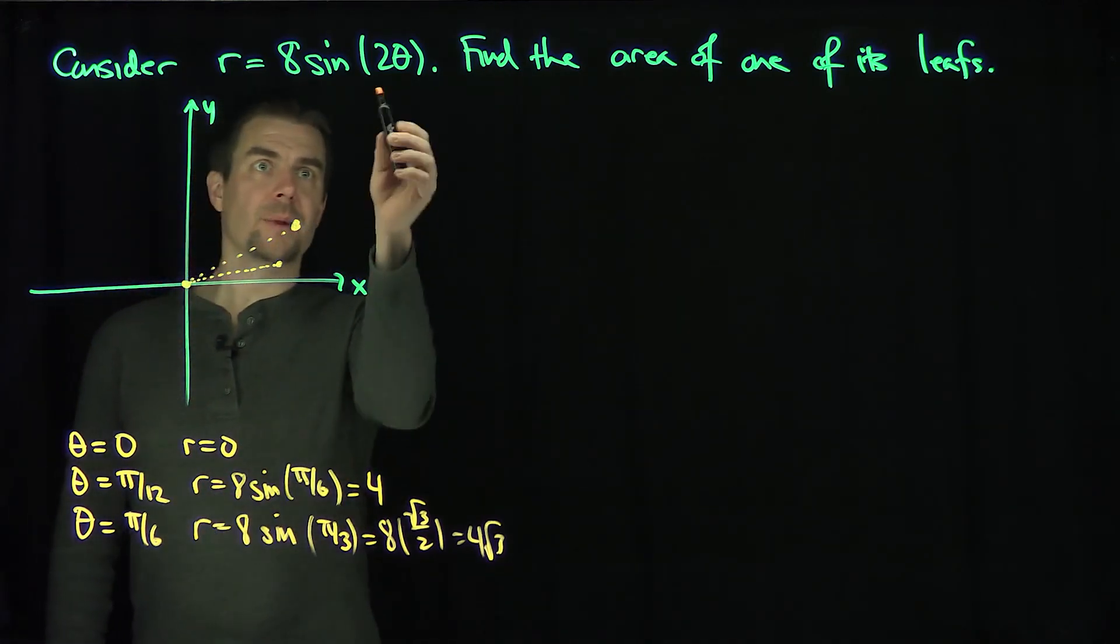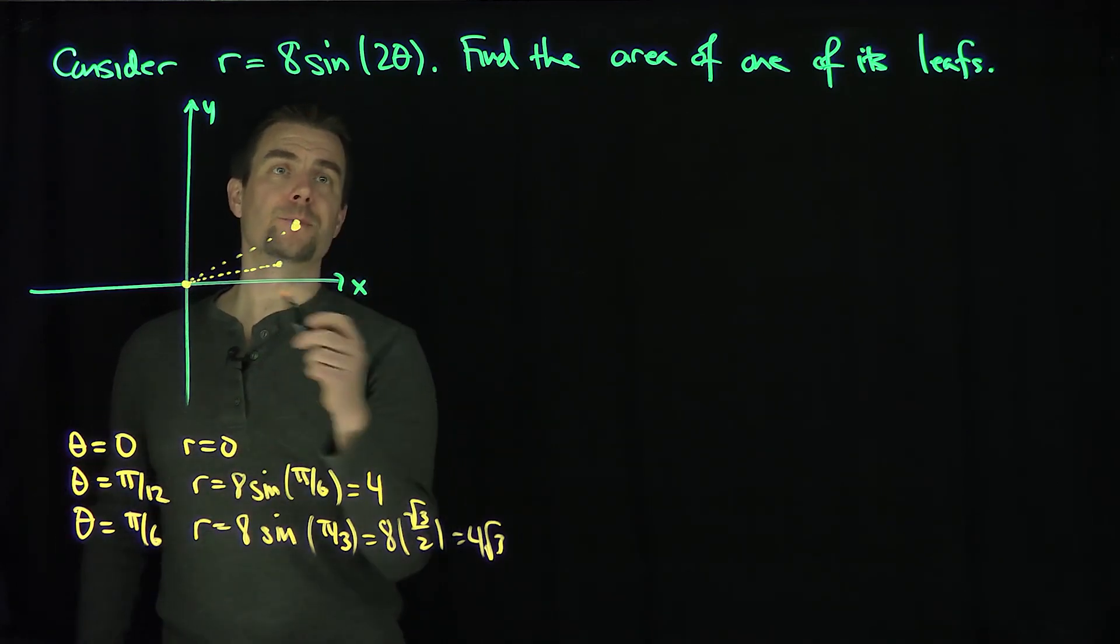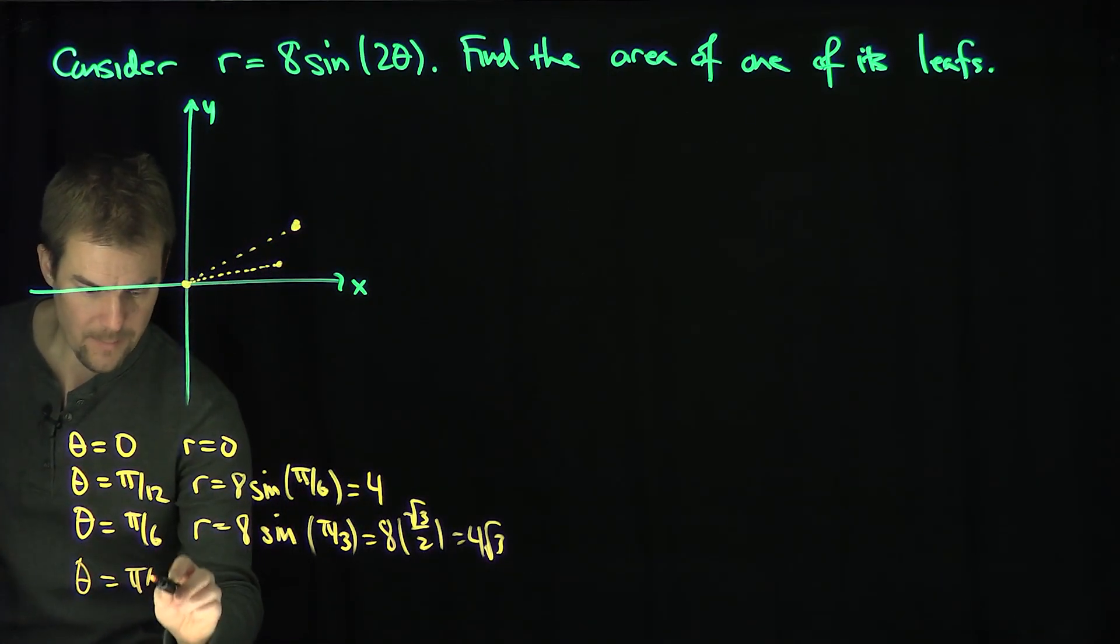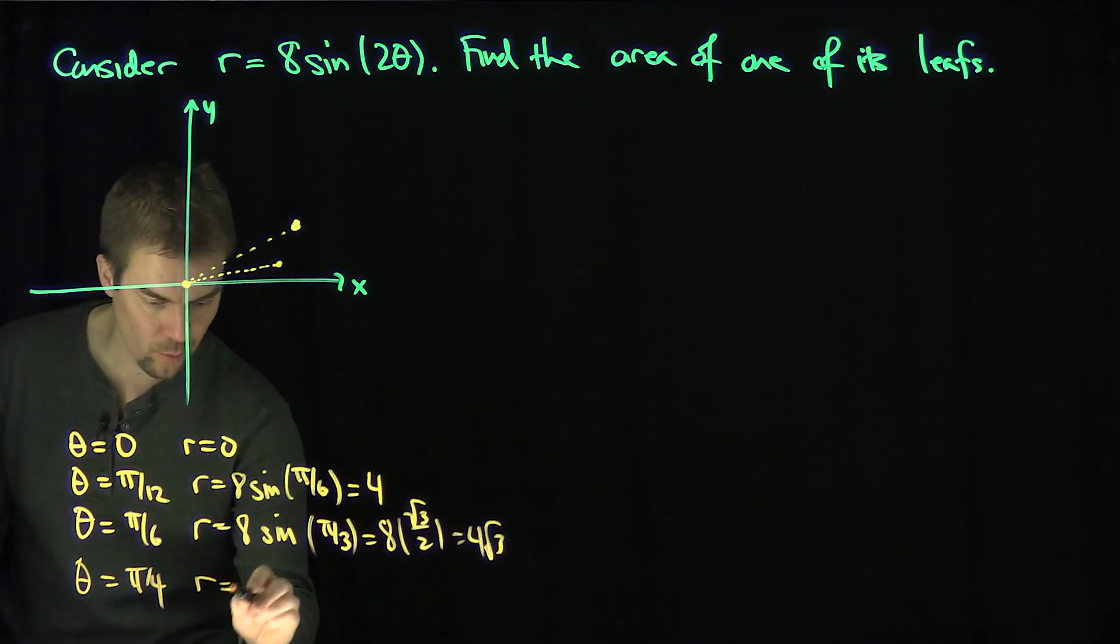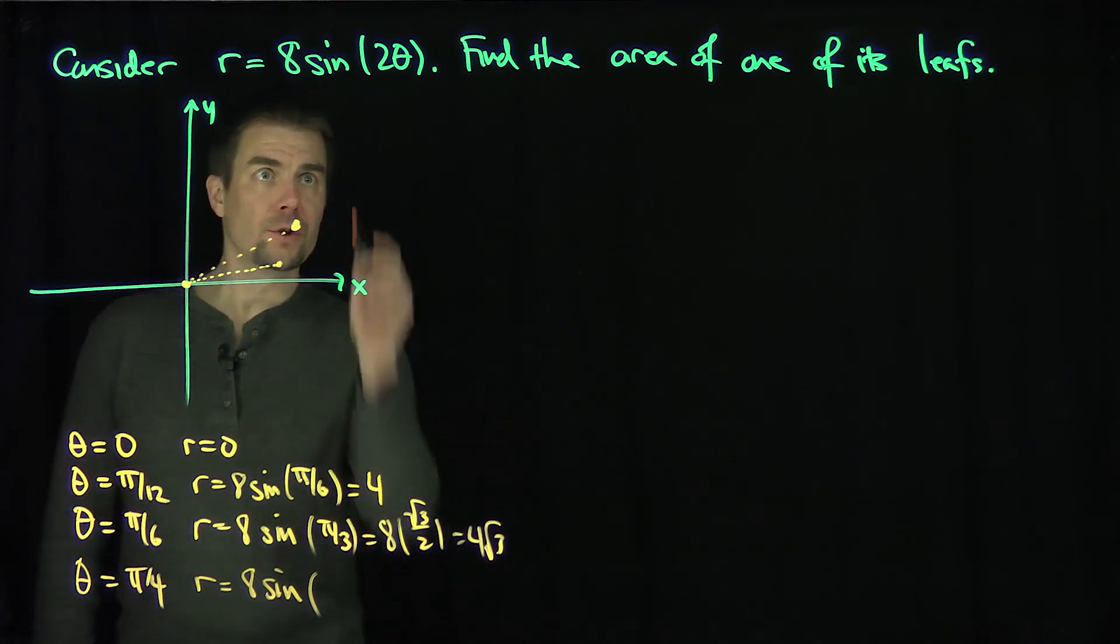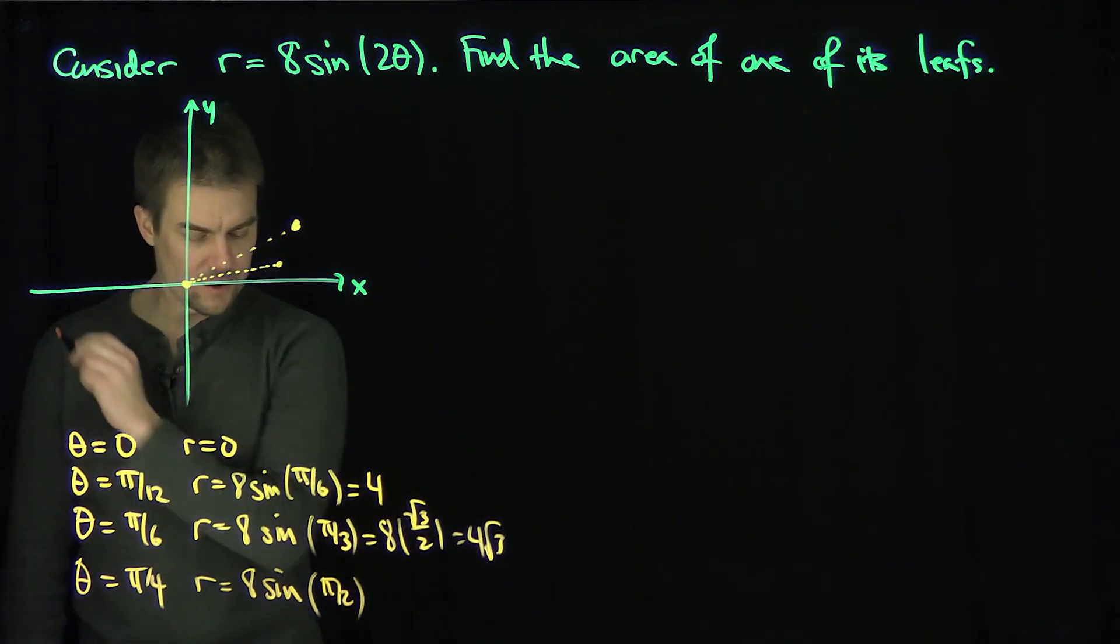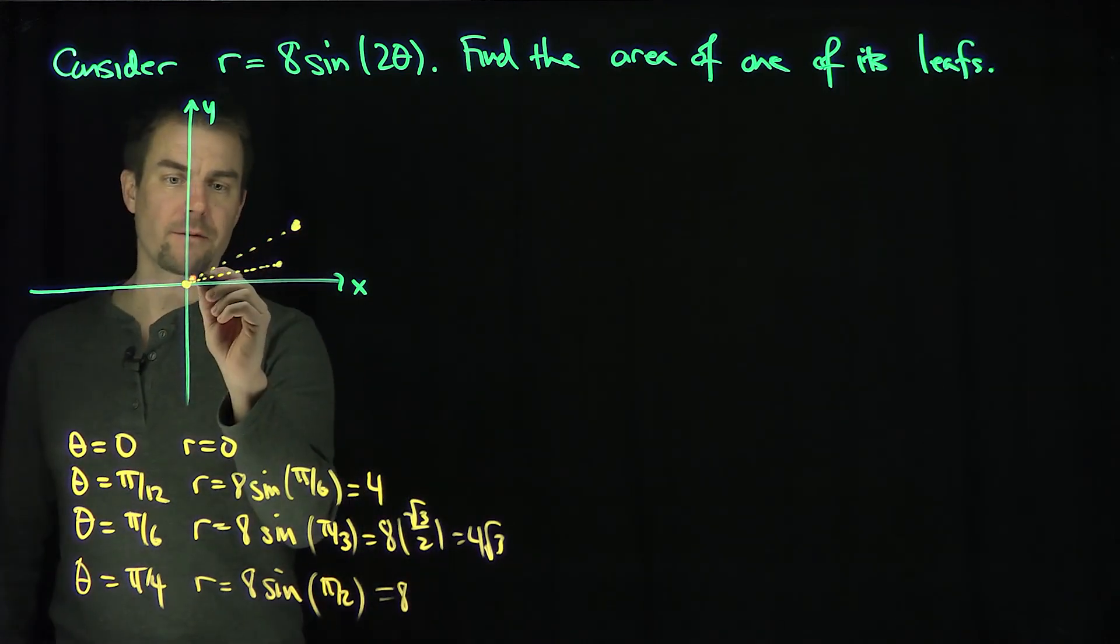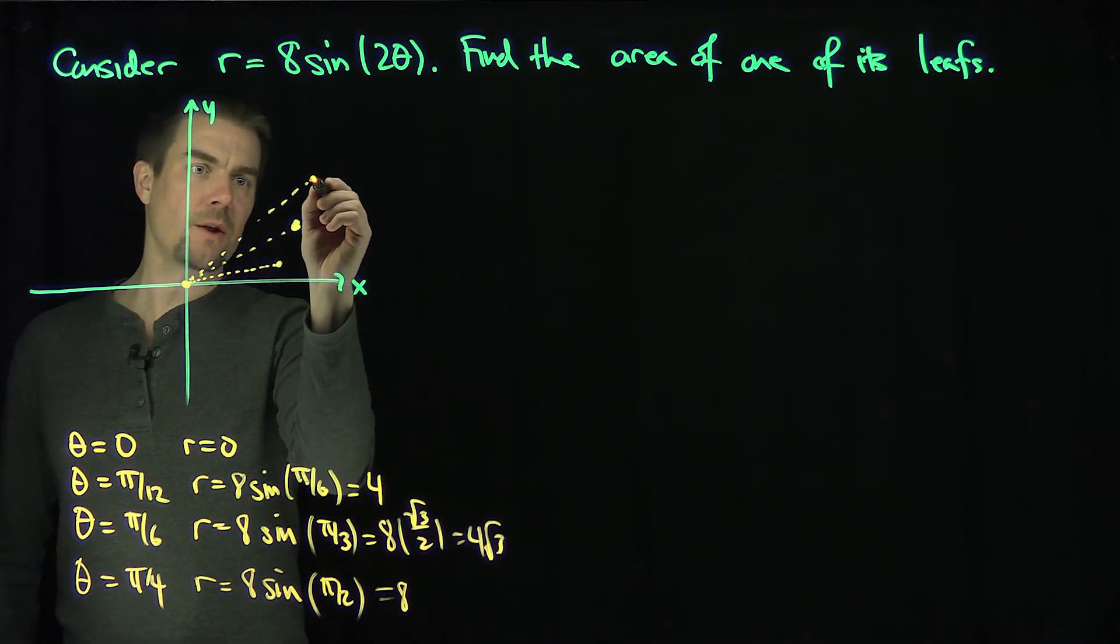And then where is this going to be maximized? The sine is maximized when I get theta equals pi over 2. So I plug in theta equals pi over 4. Theta equals pi over 4 maximizes this thing. Then r will be 8 sine of pi over 2. The sine of pi over 2 is equal to 1. So r is going to be equal to 8 here. That's where it's as big as possible. So when we go up to a pi over 4 angle, we go all the way out to 8.